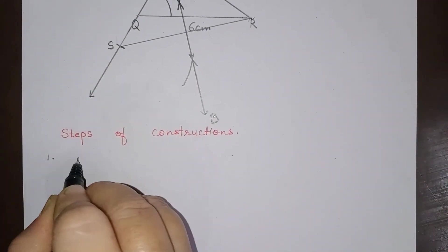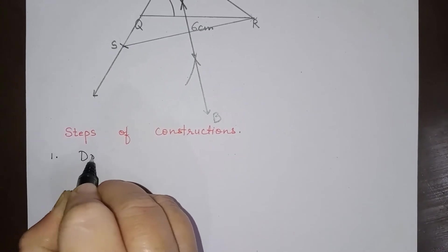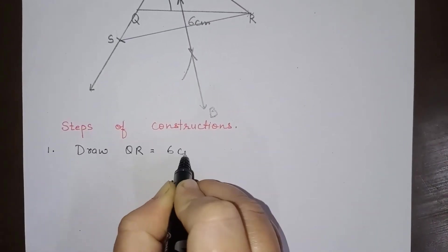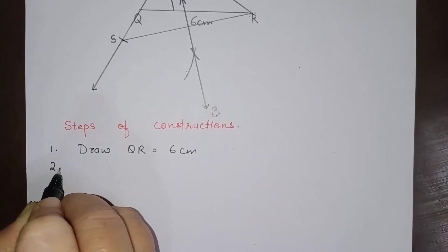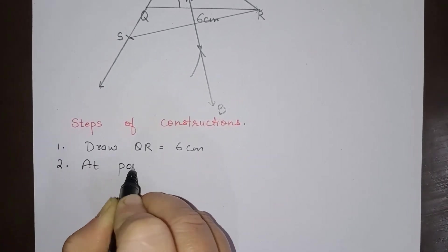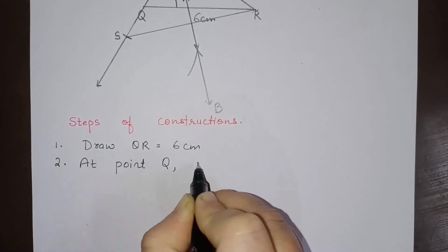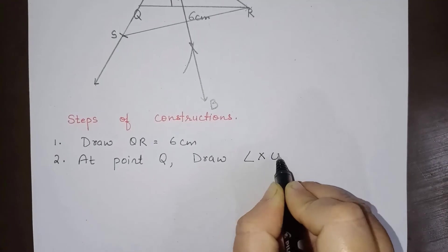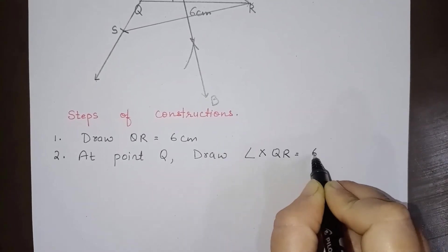First step: Draw QR equals to 6 centimeter. Second, at point Q draw angle XQR equals to 60 degree.